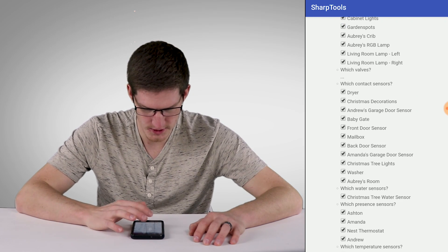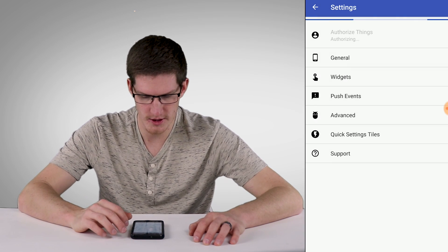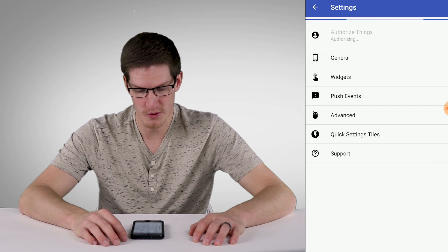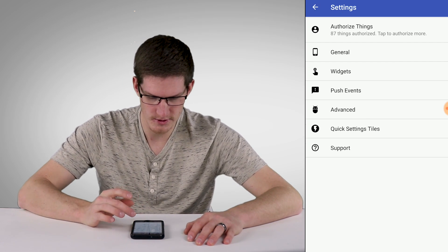I have everything selected here, almost. I have a few new devices, and I will click Authorize, and then that will go ahead and work after a few seconds and authorize all your devices. There we go, 87 things.